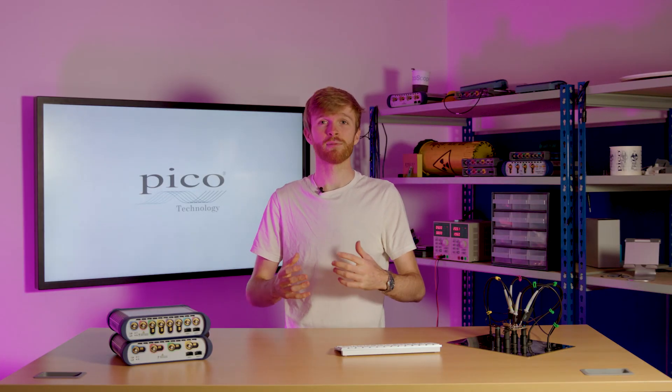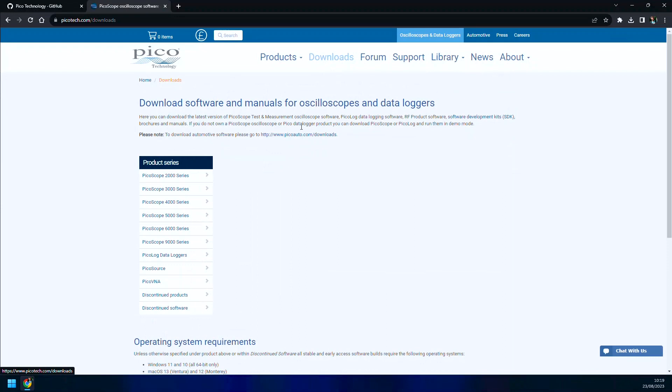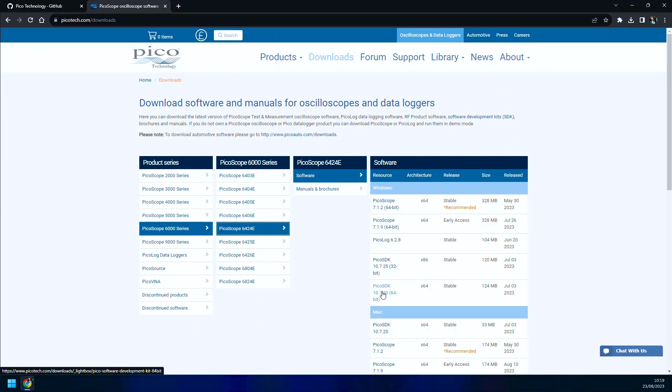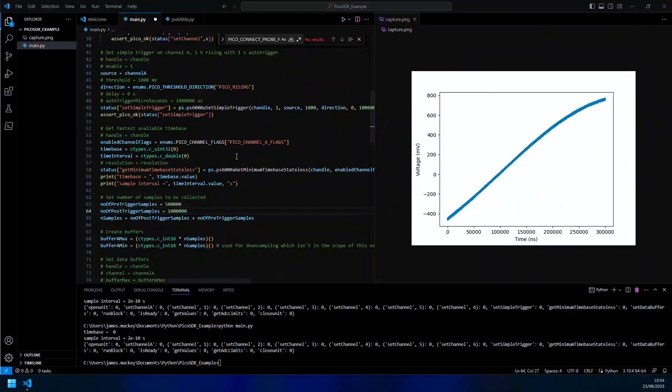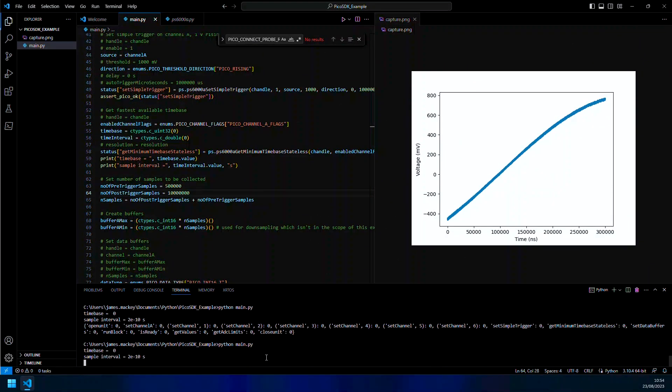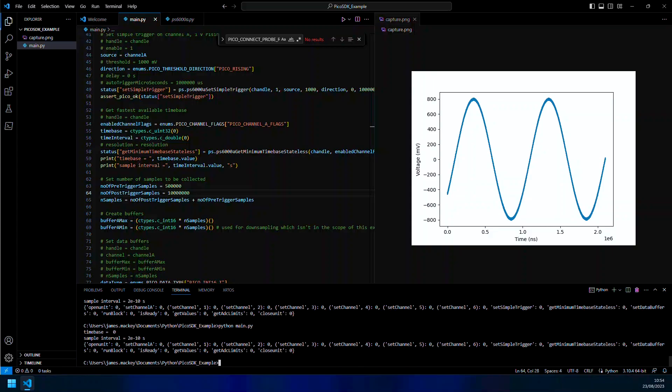Alternatively, make the most of the five giga samples per second capture rate by writing your own code using the drivers and examples provided with the Pico SDK in the most popular languages such as C, C-sharp, MATLAB, LabVIEW, and many more.